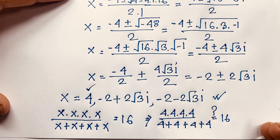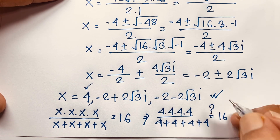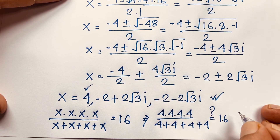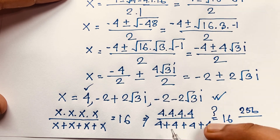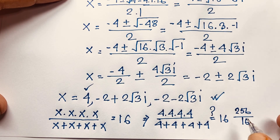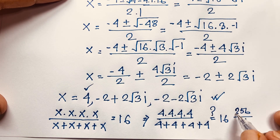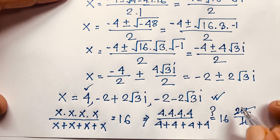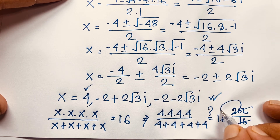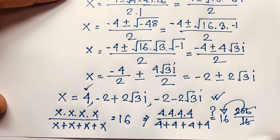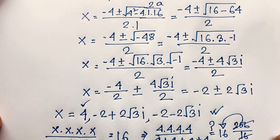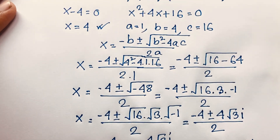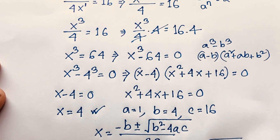We know that 4 times 4 times 4 times 4 times 4 equals 1024 — wait, 4⁴ is 256, so the numerator is 256. And 4 plus 4 plus 4 plus 4 is 16. So 256 divided by 16 equals 16. Left hand side equals right hand side, verifying our answer. Thank you all — if you enjoyed this video, please comment and share the channel for more interesting videos. Goodbye, take care.